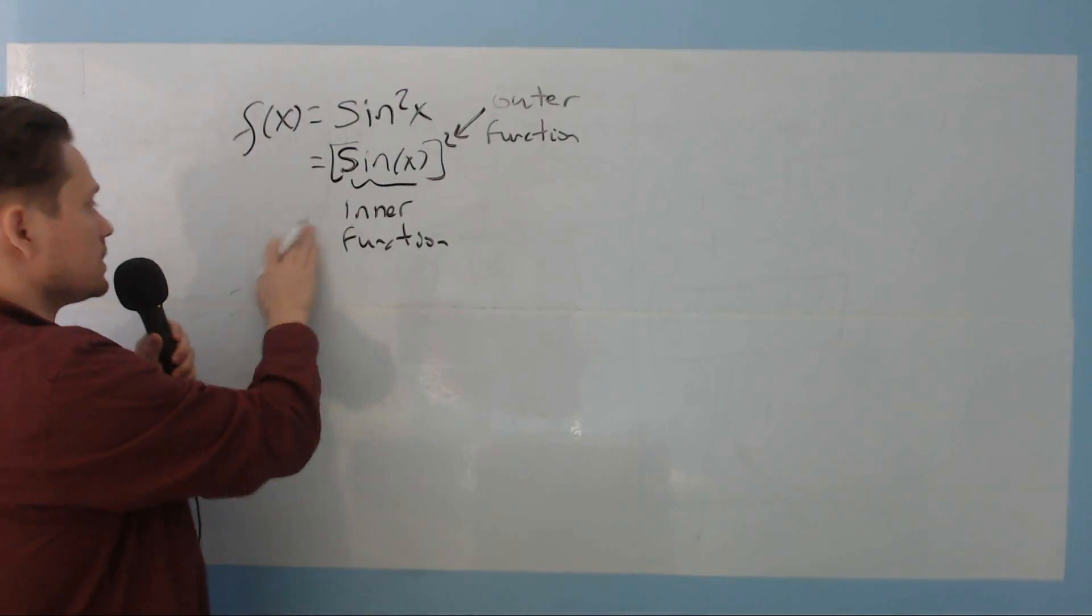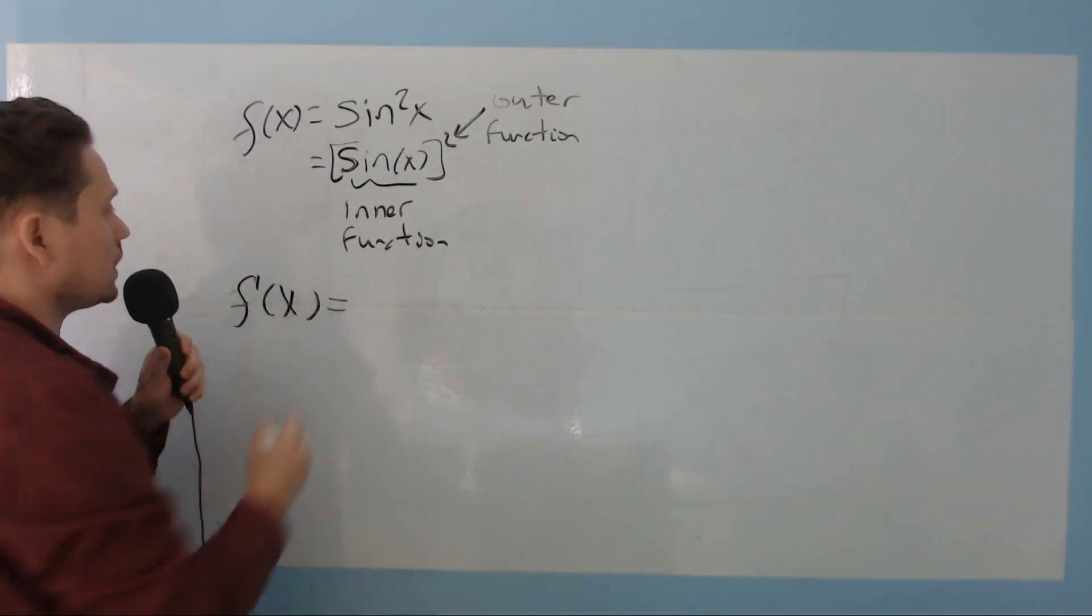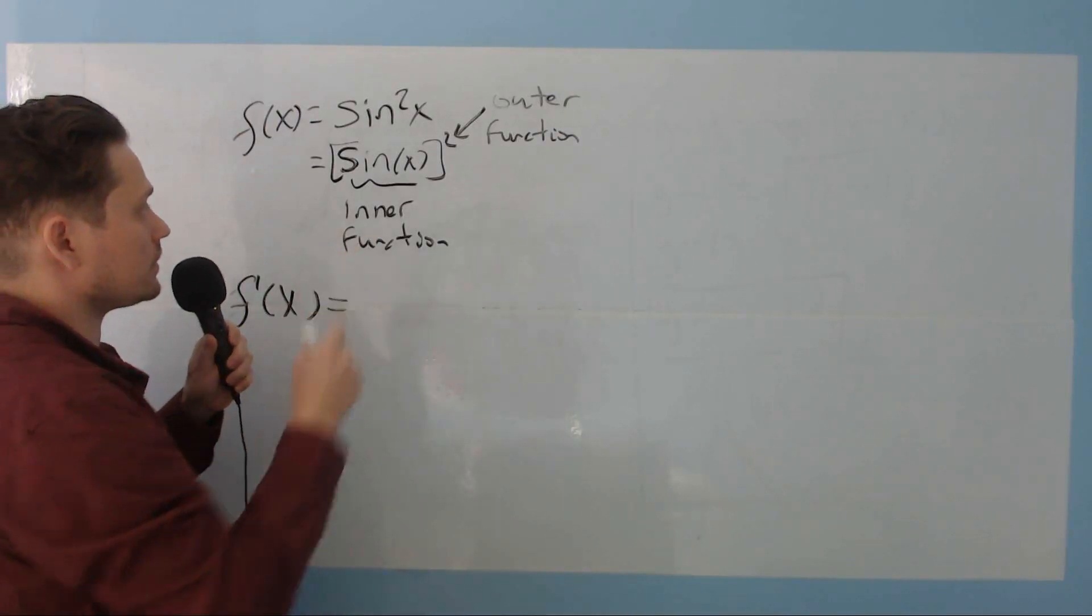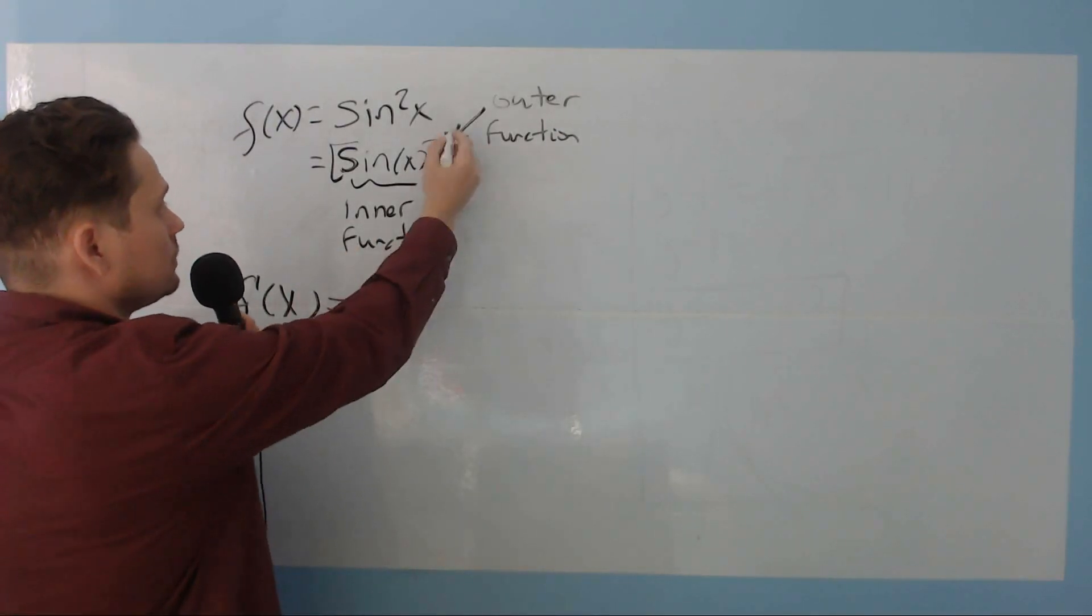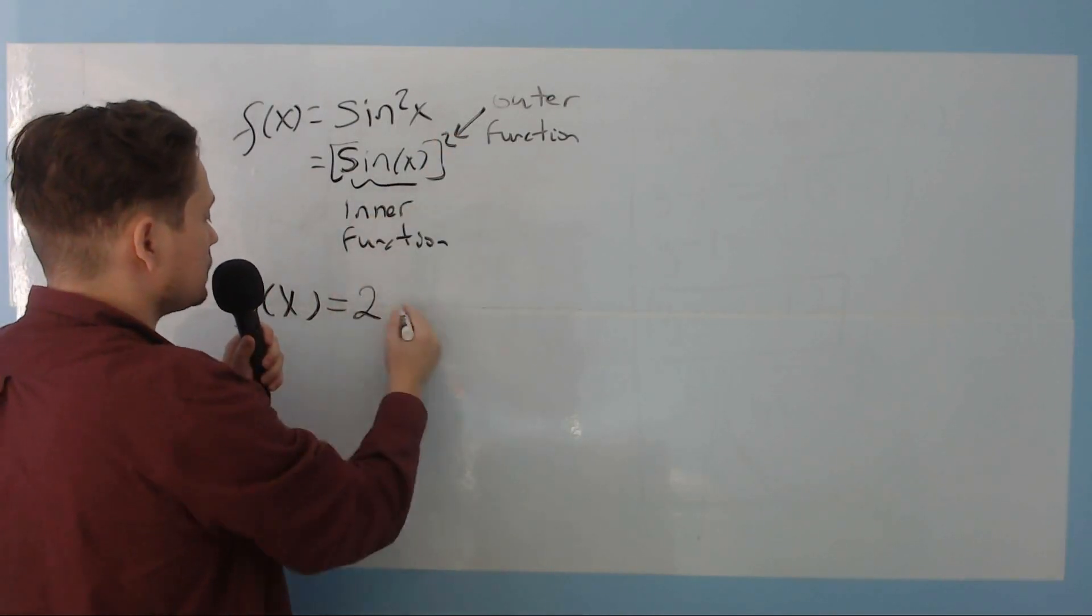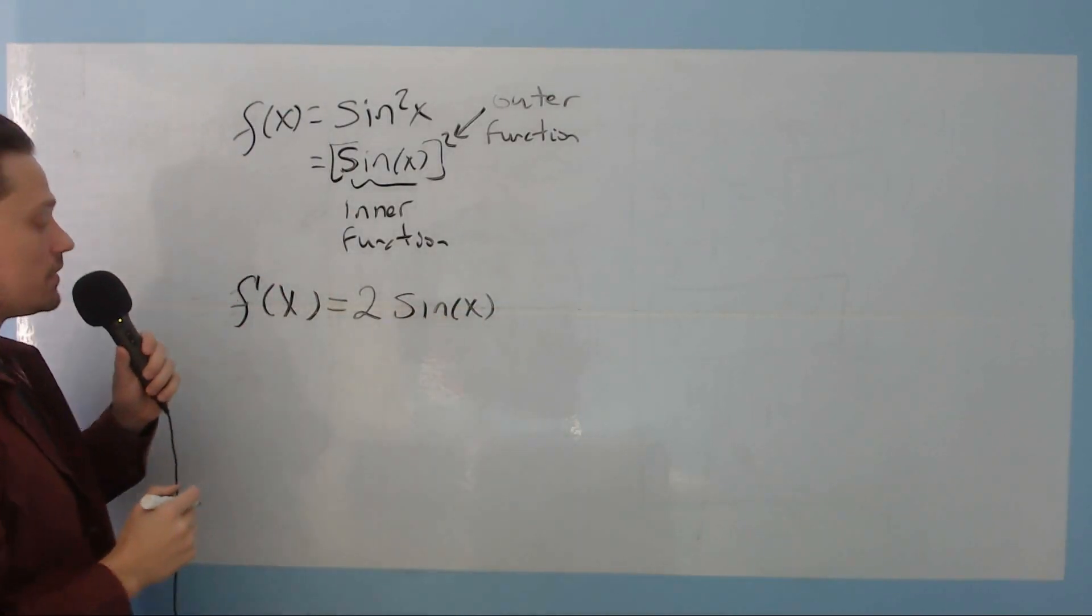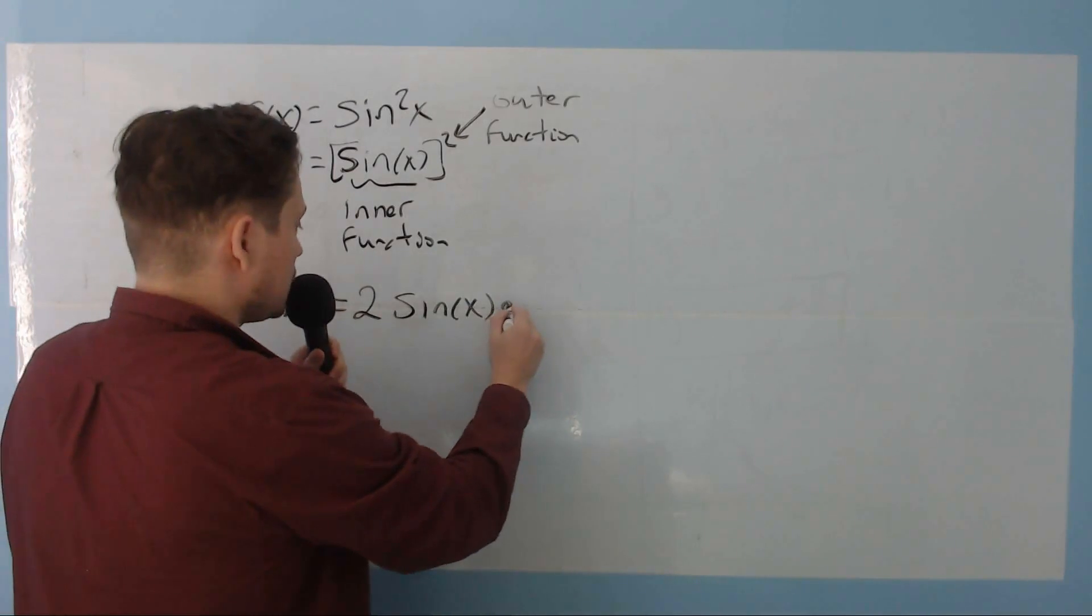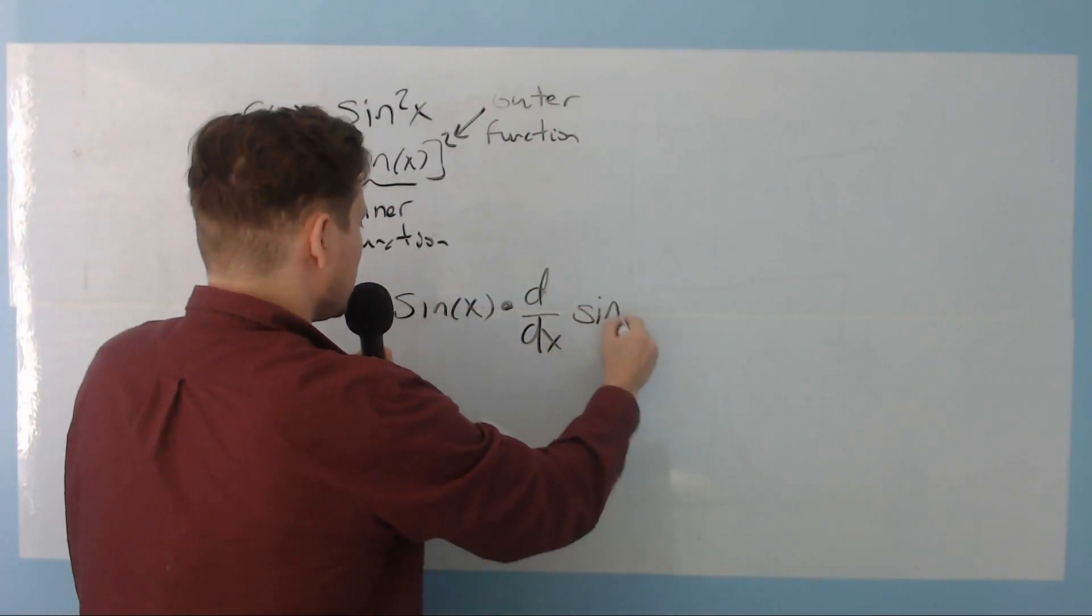Once you have that in place at the next stage, then you can simply write f prime of x. And then, you first take the derivative of the outside. So that's a 2 up here, which means you bring that down, so it becomes 2. Then you copy the inside, so that's sine of x. And then you multiply that by the derivative of the inside. So times here the derivative of sine of x.